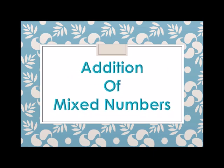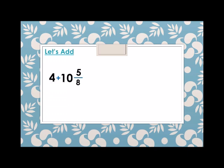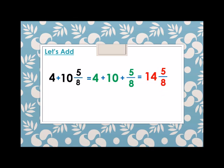Let's proceed to addition of mixed numbers. We have four plus ten and five eighths. We write the first number, which is four, plus the mixed number ten and five eighths, which equals ten plus five over eight. We add the whole numbers: four plus ten is fourteen, and keep five over eight. So the answer is fourteen and five eighths.